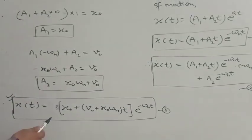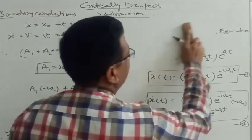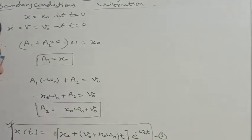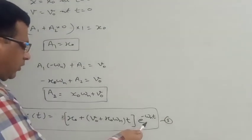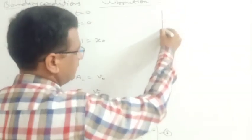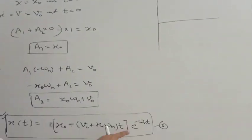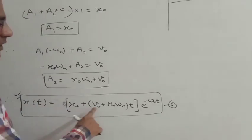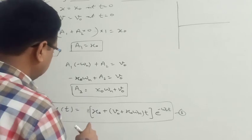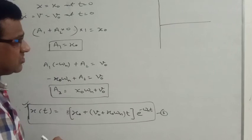Plotting a graph from this equation of motion allows us to explain the complete behavior of the critically damped system. From the equation, it is clear that it is purely exponential in form, meaning the graph represents an exponential decreasing function. Therefore, this is also a non-oscillatory or non-vibratory system.